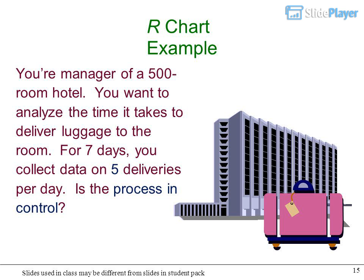R-chart example: You're manager of a 500-room hotel. You want to analyze the time it takes to deliver luggage to the room. For 7 days, you collect data on 5 deliveries per day. Is the process in control?